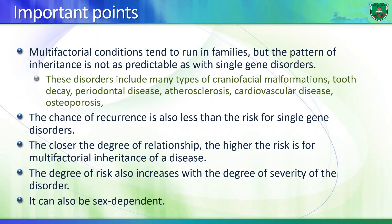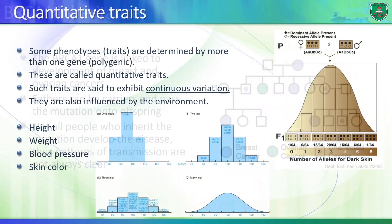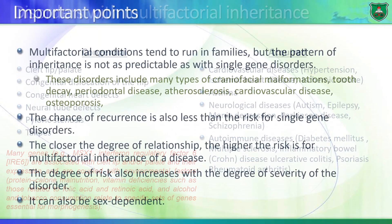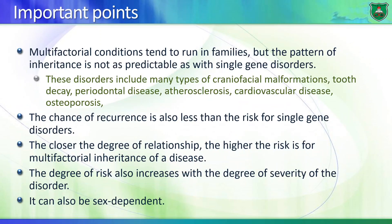Some important points about multifactorial conditions: they tend to run in families, but the inheritance pattern is not as predictable as single gene disorders — just like the inheritance of BRCA1. Having the mutated gene does not mean the person will develop breast cancer. So the inheritance pattern is not clear; what we're saying is that there is an increased risk. The chance of recurrence is also less than the risk for single gene disorders.